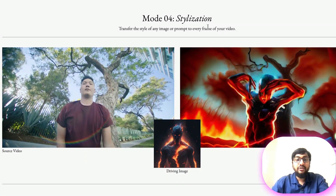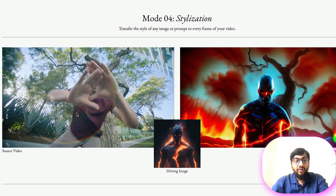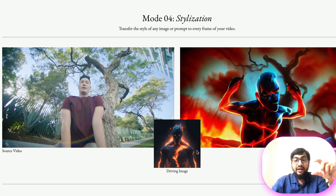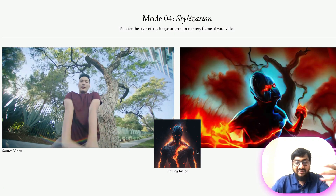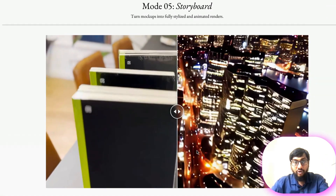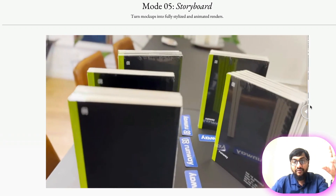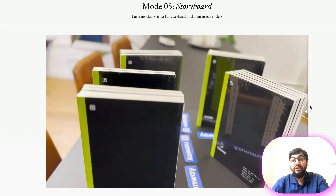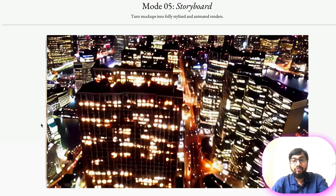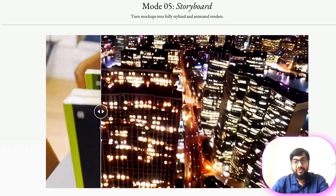You can also do model stylization — transfer the style of one image to another. For example, you have a source video, you use its style and apply it, very similar to what people are doing with ControlNet. And you can also do storyboarding — turn a full mockup into an animation render. This is what people have been doing with Gen1: you have an input video and it gets converted into, say, a skyline shot.